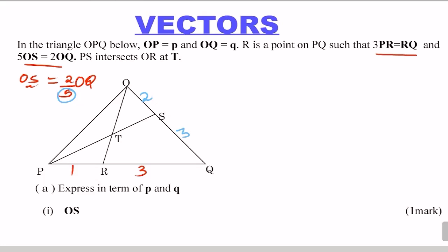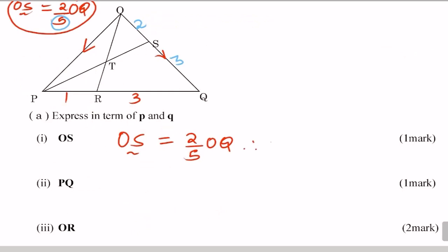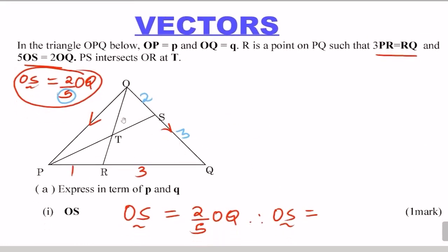It's also good to indicate the directions: OP is the direction for p and OQ is the direction for q. Now having that, we go to OS. From 5OS equals 2OQ, dividing both sides by 5 gives OS equals 2/5 OQ. Since OQ equals vector q, OS therefore equals 2/5 q.